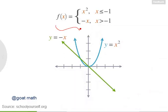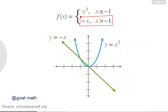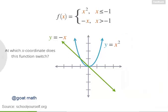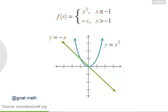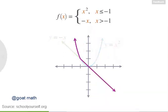Now let's take a closer look at this notation. This says we're defining a new function f, which equals x squared for all values of x less than or equal to minus 1, and it equals minus x for all values of x greater than minus 1. On this graph, can you identify at which x coordinate f of x switches from being x squared to being minus x? f of x switches when x equals minus 1. When x is less than or equal to minus 1, f of x equals x squared, but at x equals minus 1 this function switches and equals minus x for values of x greater than minus 1.